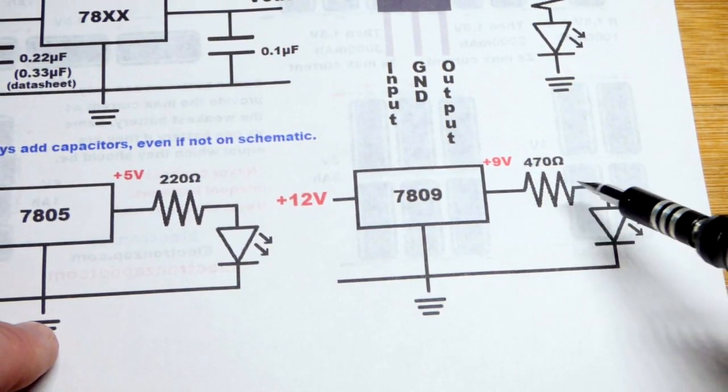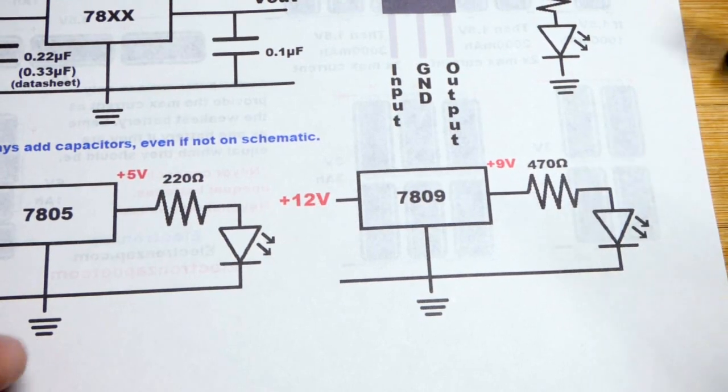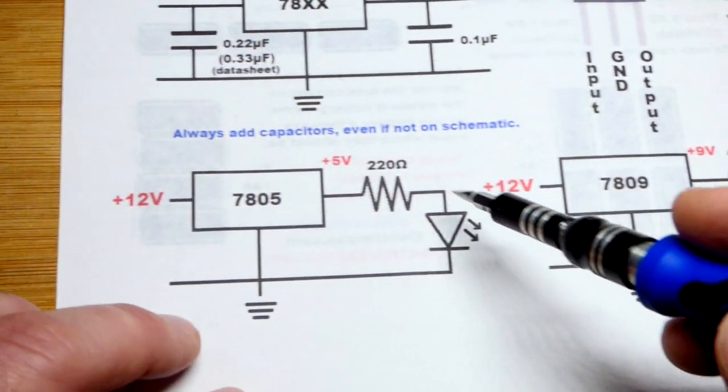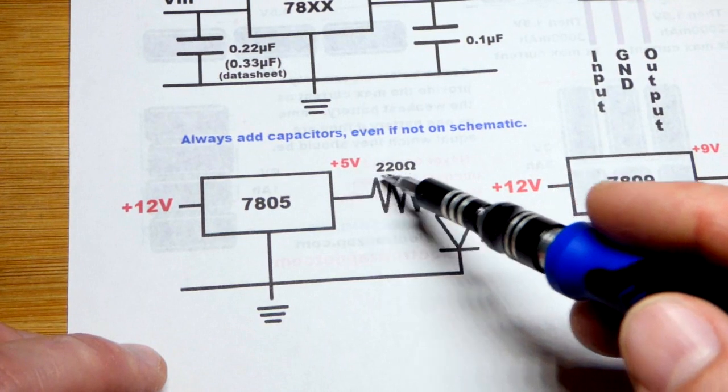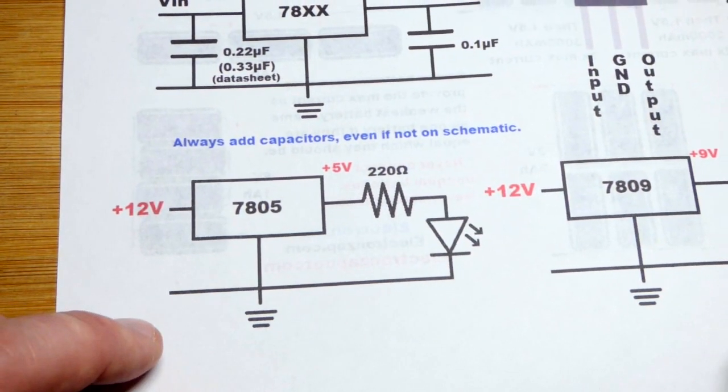This one's going to have a 470 ohm resistor protecting it. It can really only handle about 9 volts. That's what that regulator is going to do, and then this one has the 220 ohm resistor to protect an LED that can really only handle about 5 volts.